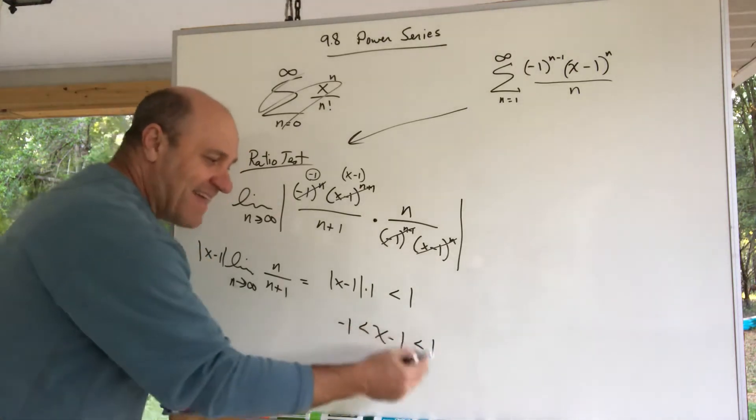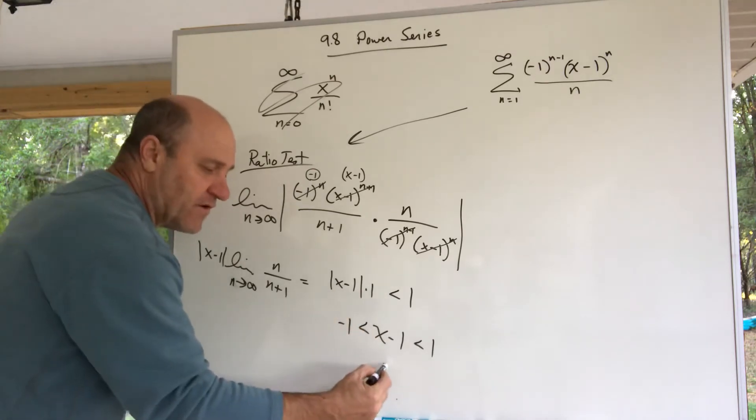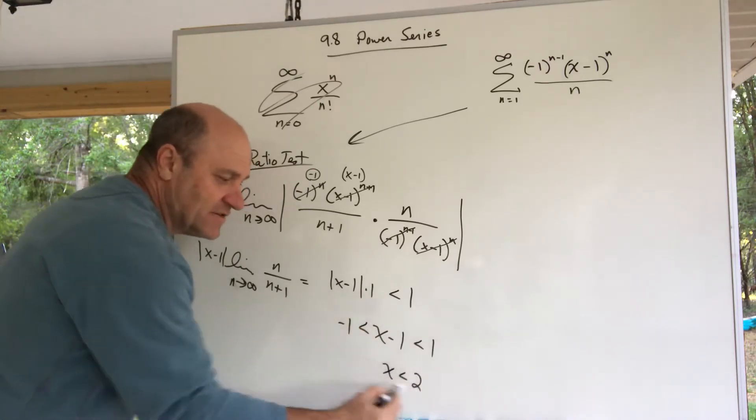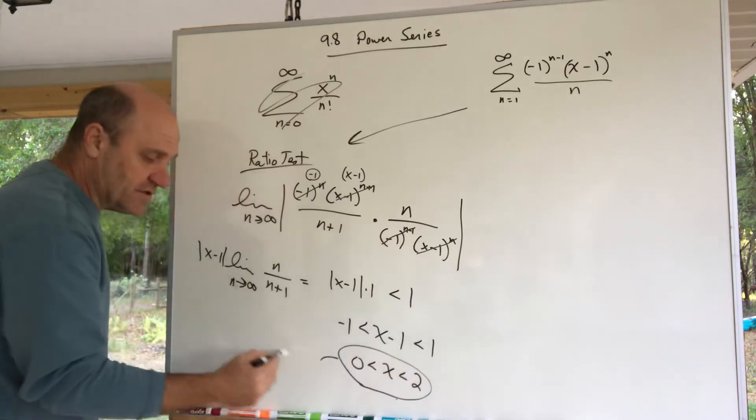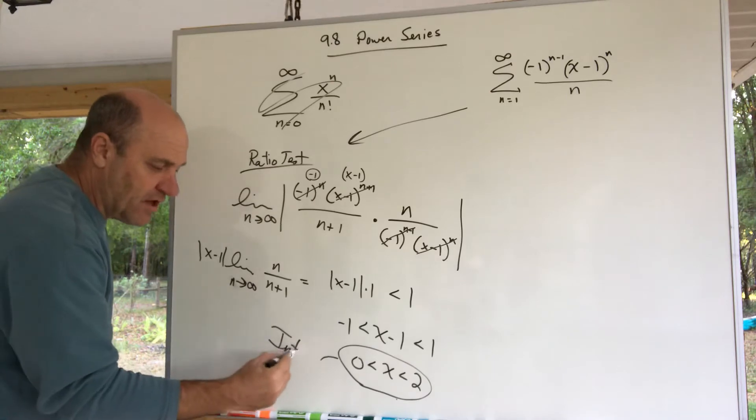I'll add this 1 to find the interval for x. I get x is less than 2 and x is greater than 0. There is the interval of convergence—the interval of convergence.